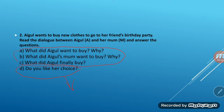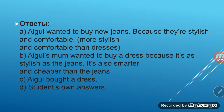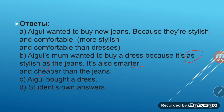The second question B: 'What did Aigul's mom want to buy? Why?' Aigul's mom wanted to buy a dress because it's as stylish as the jeans — as stylish as the jeans. It's also smarter and cheaper than jeans.